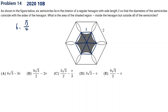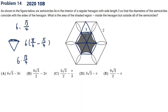Secondly, we subtract the arch areas. Each arch is a one-sixth circle minus an equilateral triangle, so one arch is pi over six minus root three over four. There are six such pieces, so times six. So the shaded region is six times root three over four, minus six times pi over six.